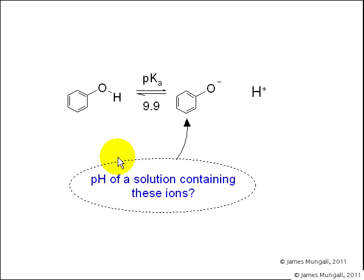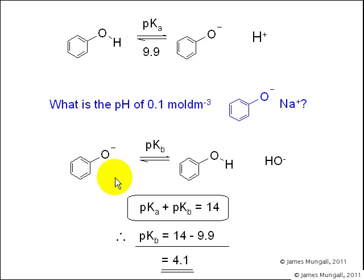The kind of question we want to answer is if we're given the pKa or Ka value of a weak acid, in this case phenol, what will the pH of a solution containing not the weak acid but the conjugate base be? For example, what is the pH of 0.1 mol per decimeter cubed sodium phenoxide?